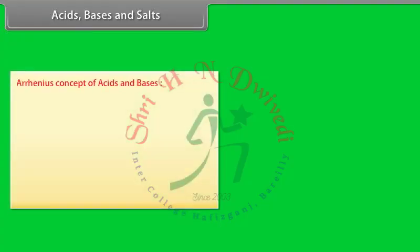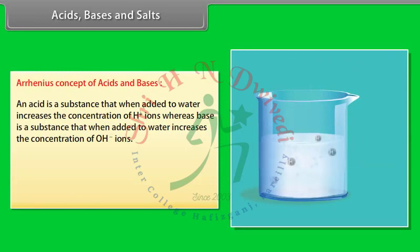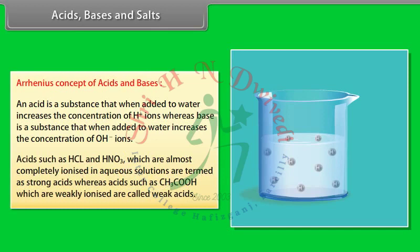According to the Arrhenius concept, an acid is a substance that when added to water increases the concentration of H⁺ ions, whereas a base is a substance that when added to water increases the concentration of OH⁻ ions. Acids such as HCl and HNO₃, which are almost completely ionized in aqueous solution, are termed strong acids.